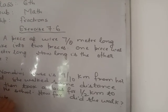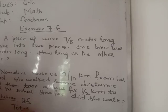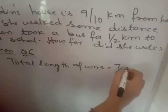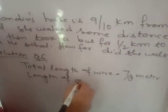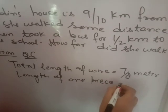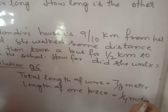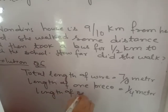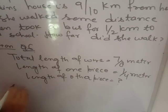Solution. Question 6. First, total length of wire is 7/8 meters. One piece is equal to 1/4 meter. We have to find the length of the other piece.